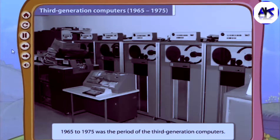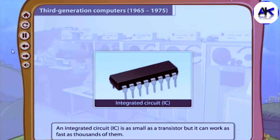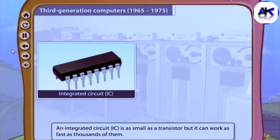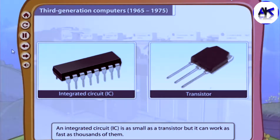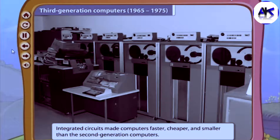The period from 1965 to 1975 saw the development of third generation computers. Integrated circuits were introduced during this period. An integrated circuit, or IC, is as small as a transistor but can work as fast as thousands of them. Integrated circuits made computers faster, cheaper, and smaller, using less electricity and making fewer mistakes.